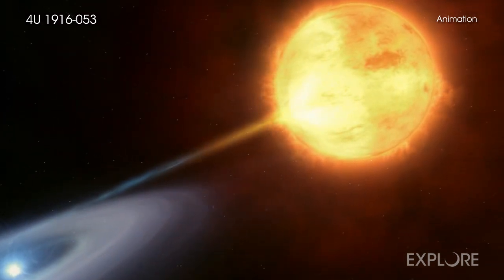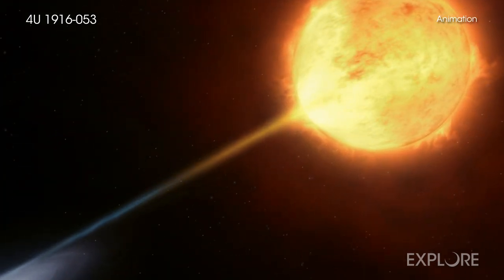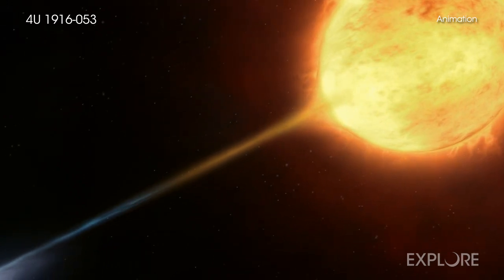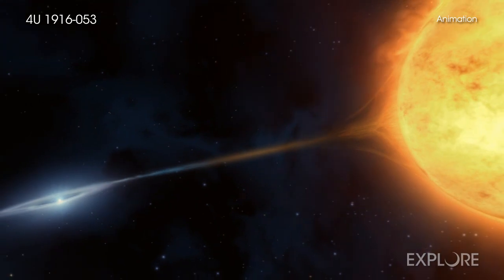While the Moon orbits our planet once a month, the dense companion star in 4U-1916-053 whips around the neutron star and completes a full orbit in only 50 minutes.